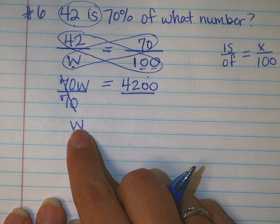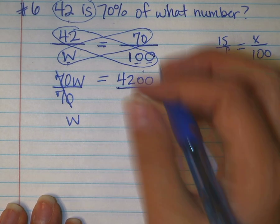How many W's did I write? One. One W. I don't need the one in front of it. Bring down your equal sign.